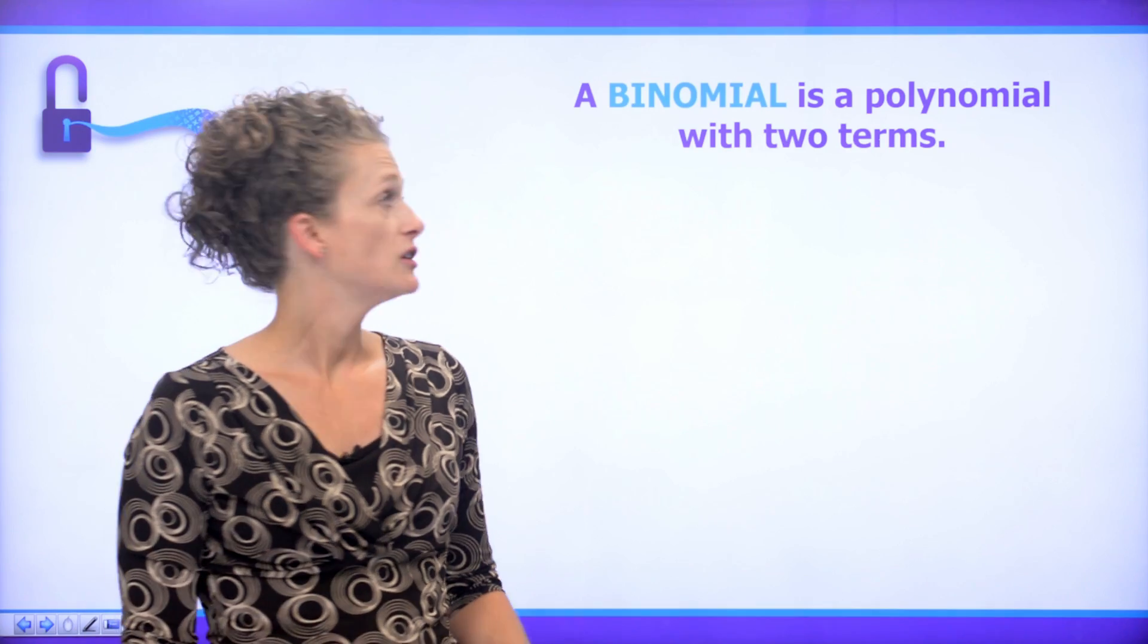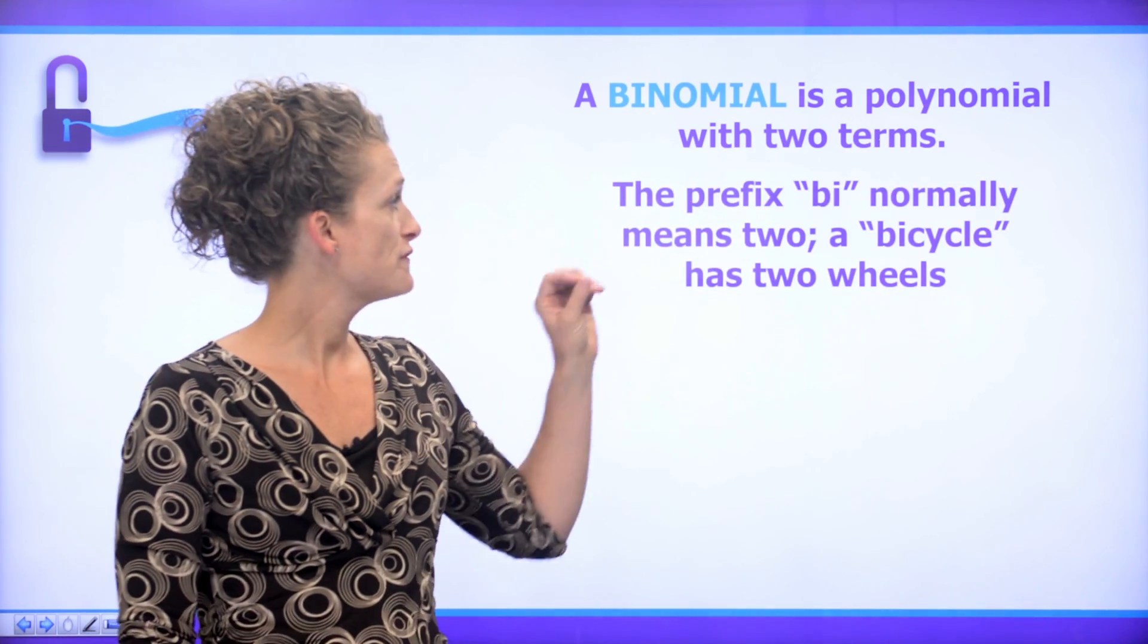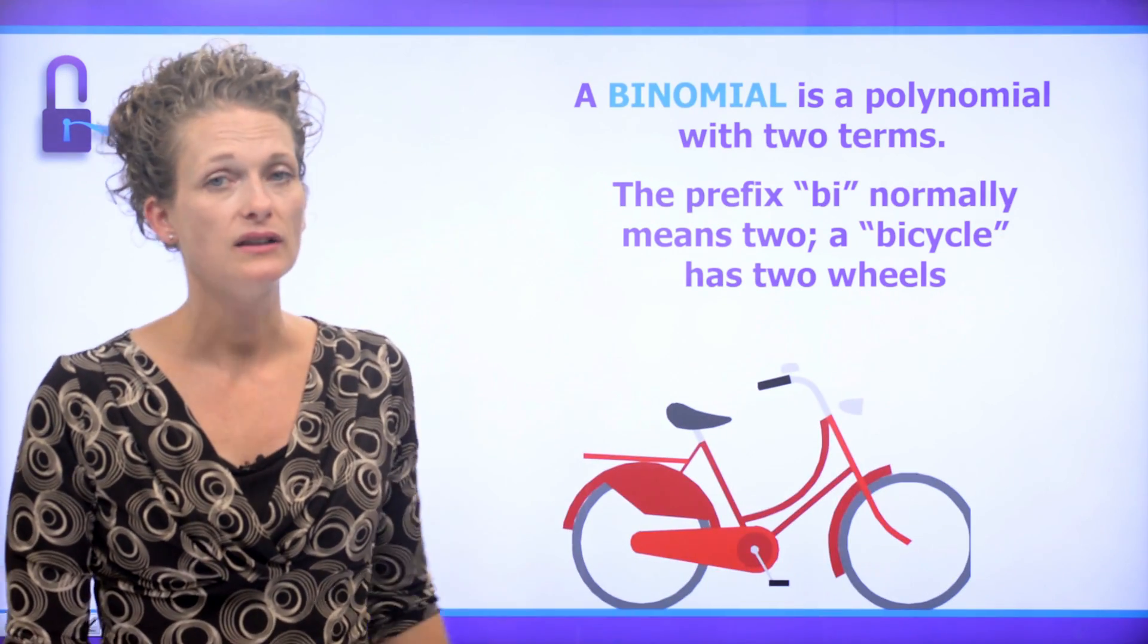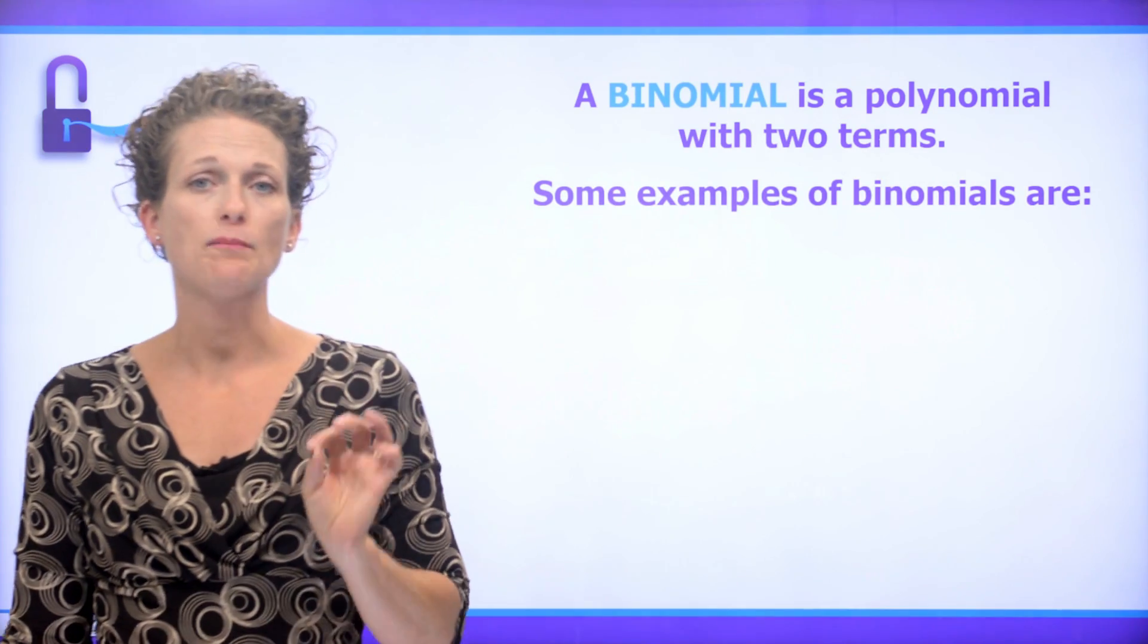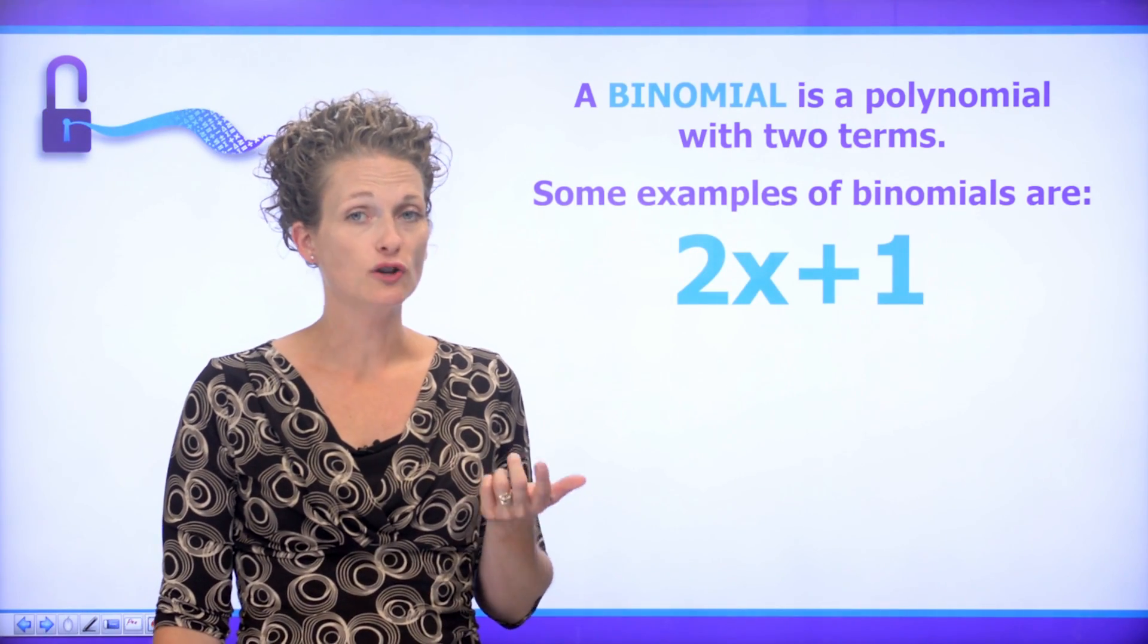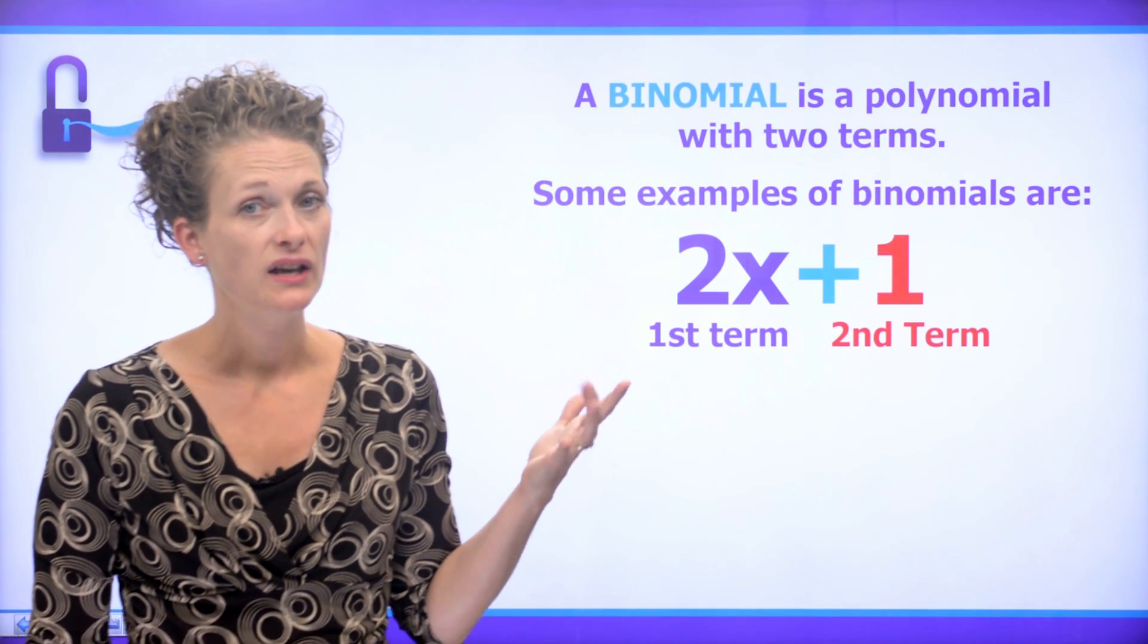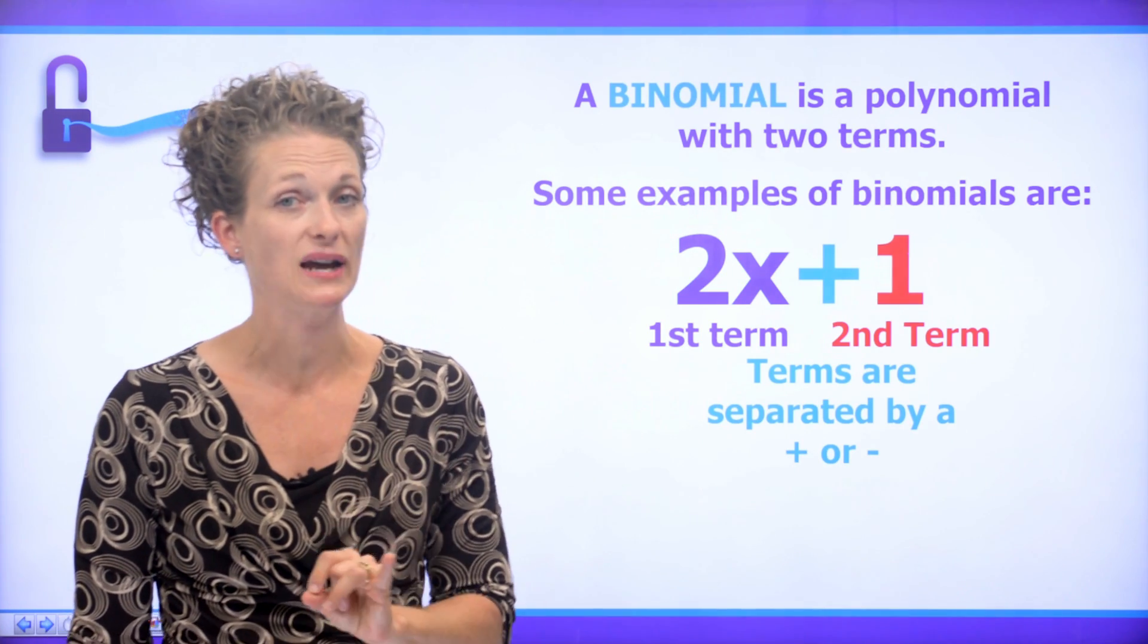Now a binomial is a polynomial that has two terms. The prefix bi normally means two, such as a bicycle that has two wheels. So let's look at an example of some binomials. 2x plus 1 is a binomial because we have a first term, we have a second term, and we know this because terms are separated by a plus or a minus.